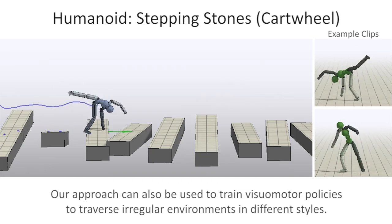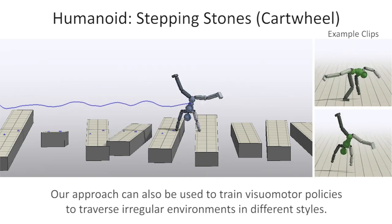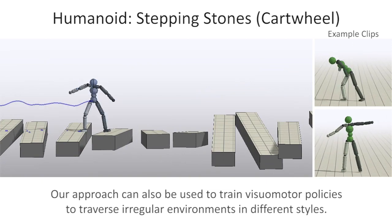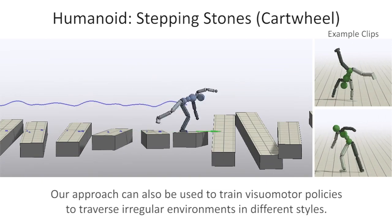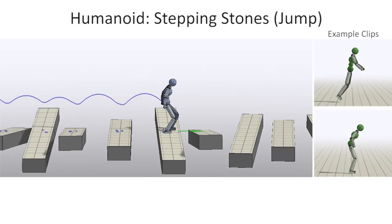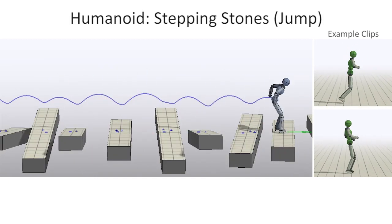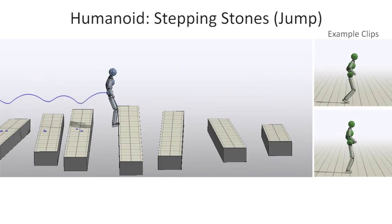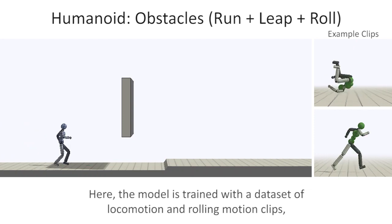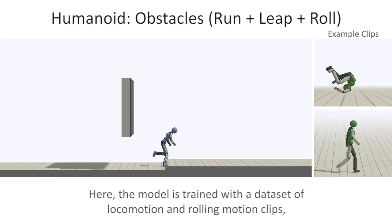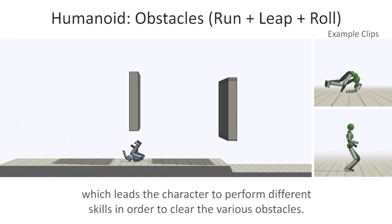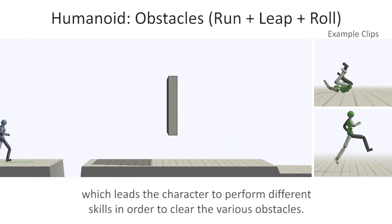Our approach can also be used to train visual motor policies to traverse irregular environments in different styles. Here the model is trained with a dataset of locomotion and rolling motion clips, which leads the character to perform different skills in order to clear the various obstacles.